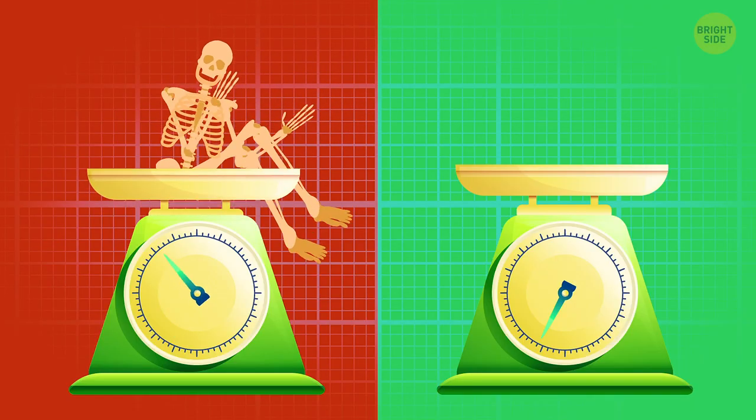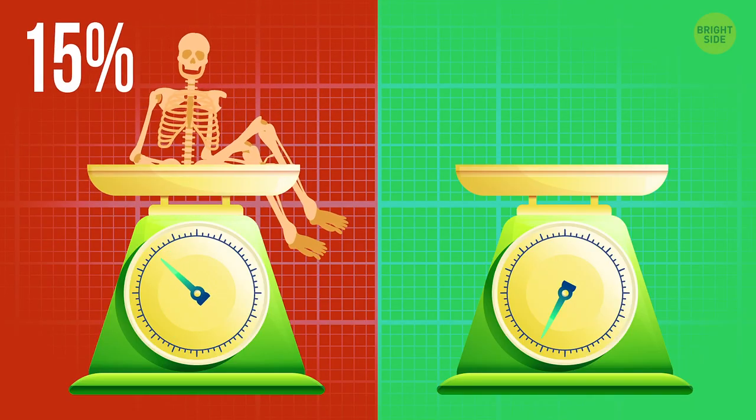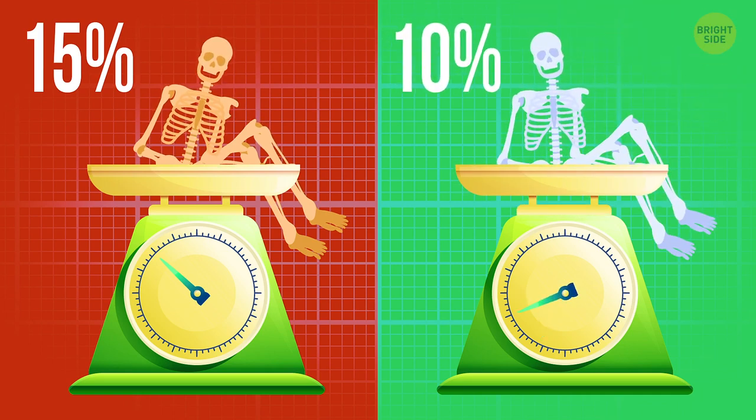Right now, your skeleton is about 15% of your body mass. If you had rubbery bones, you'd weigh about 10% less.